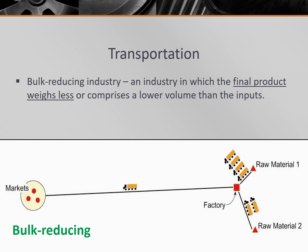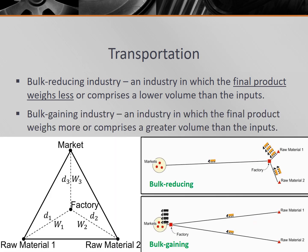A coal burning power plant relies on a raw material that loses weight by being processed — the coal is burned and emitted as smoke and carbon dioxide. Therefore, a coal burning power plant would likely locate near a coal pit, rather than near the market that consumes the electricity. Other localized raw materials — that is, those found in a very specific place — include iron ore, bauxite, and lumber, and their processing plants tend to locate nearby.